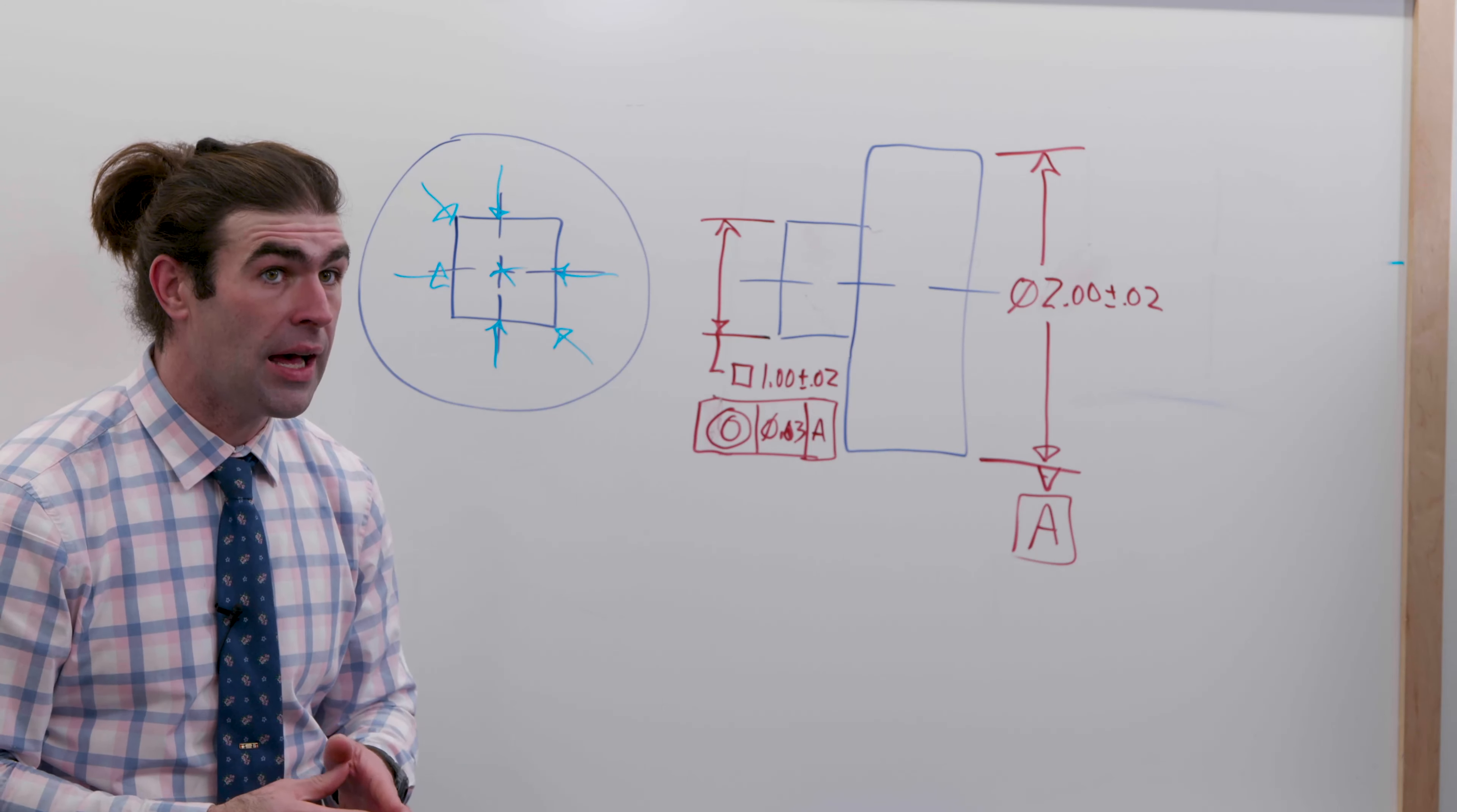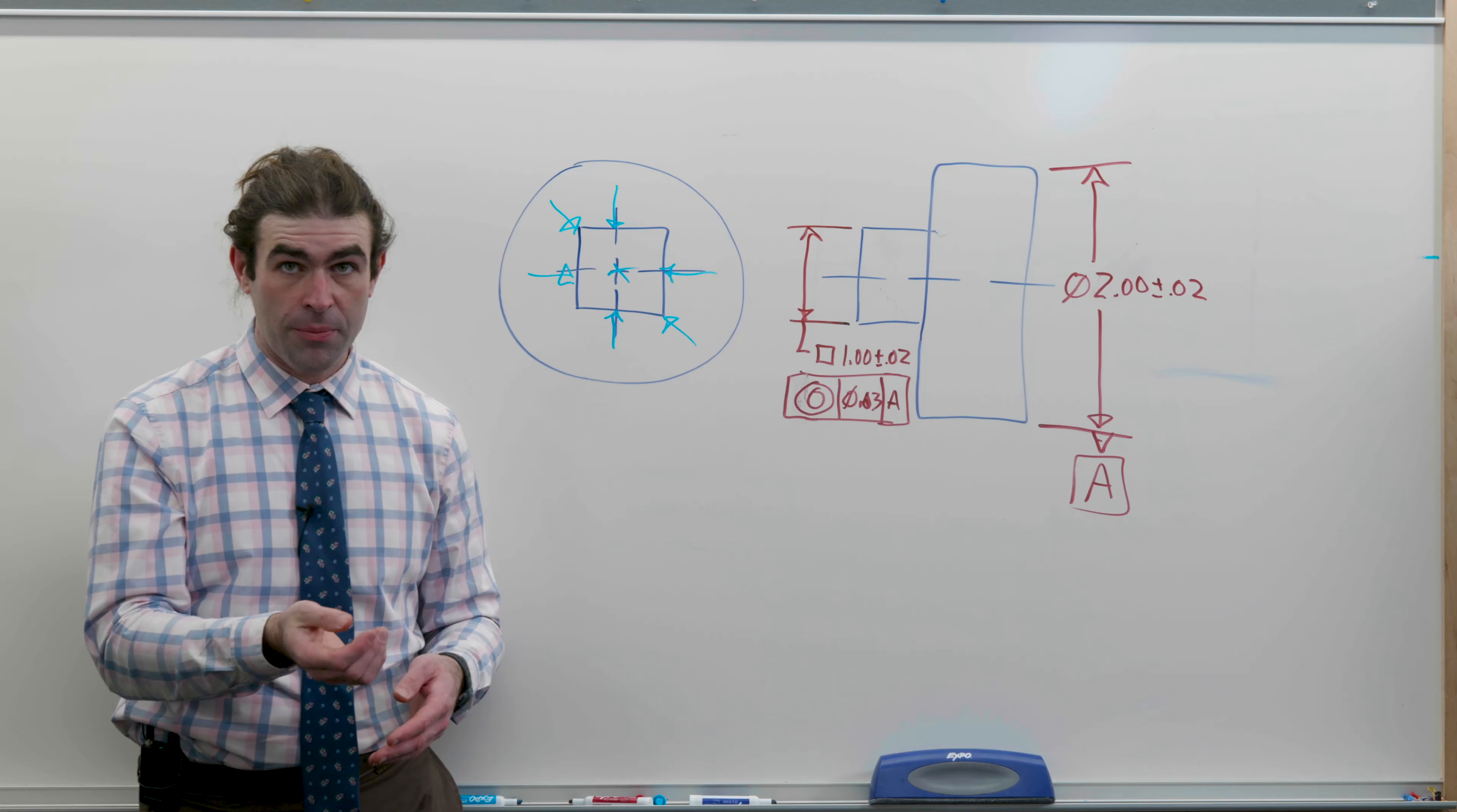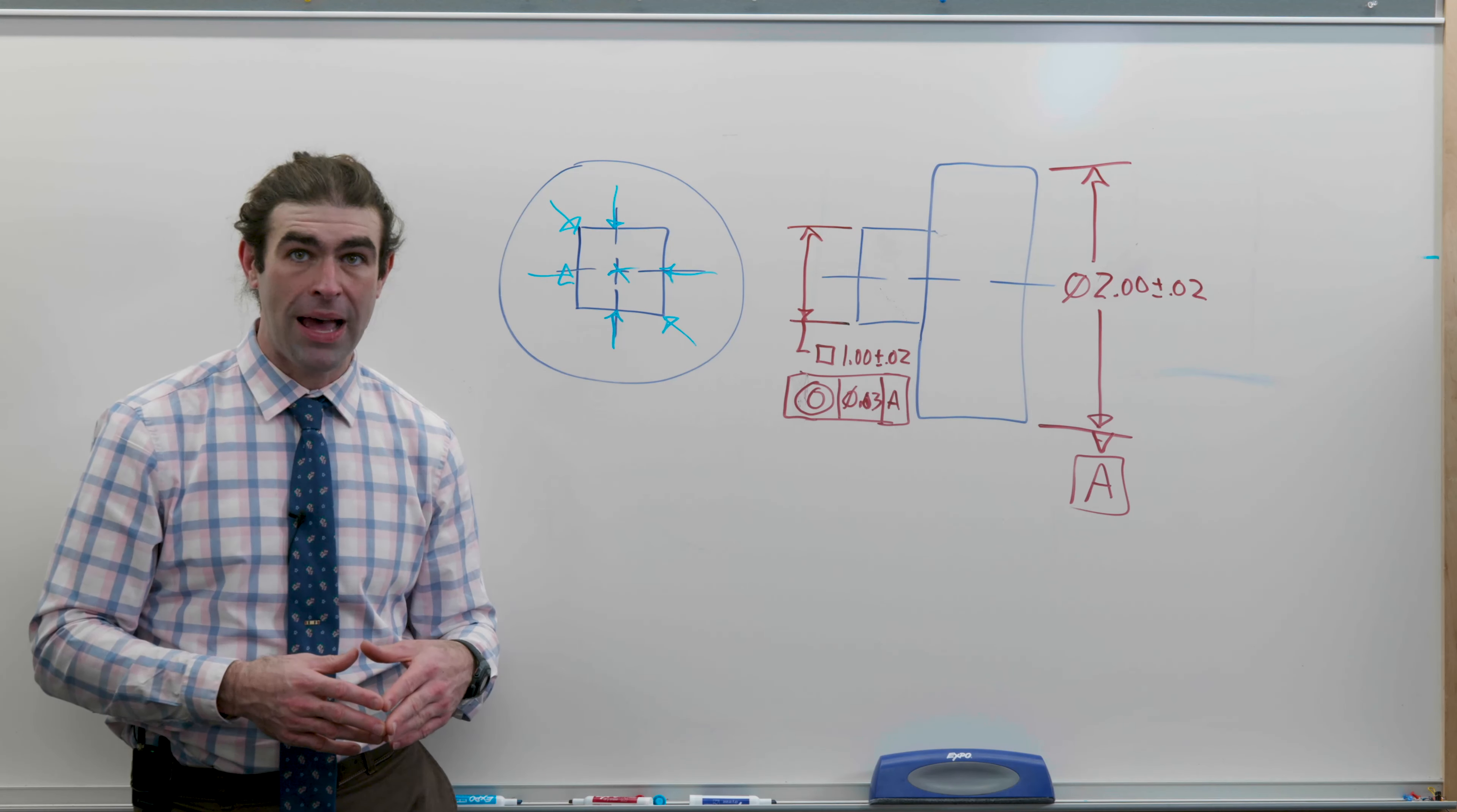Now, this is very uncommon, but this is the reason a part can pass or fail a runout check and pass a concentricity check. Concentricity is really designed to control the balance of features. Runout controls the surface, the form of the surface, and locates to an axis, whereas concentricity really cares about the balance. It's also controlling location to a certain degree, but it was really envisioned for spinning parts that need to have balance.